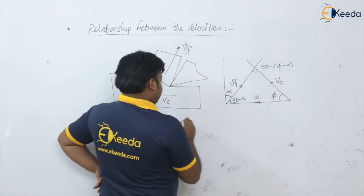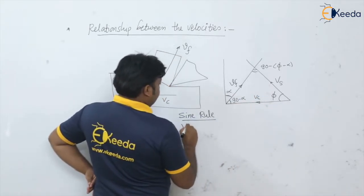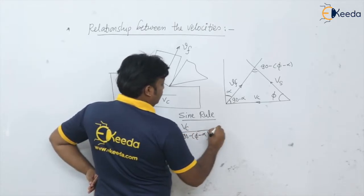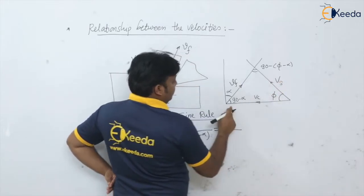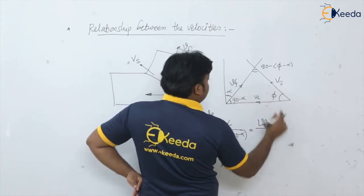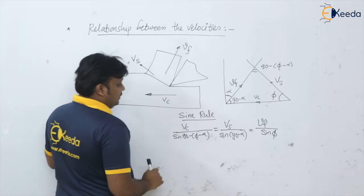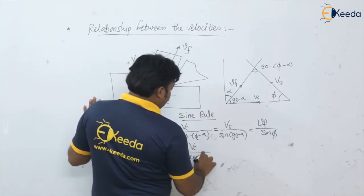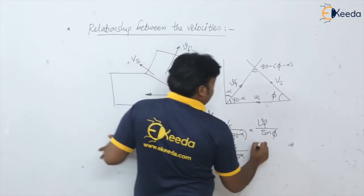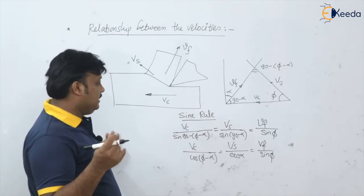If we apply the sine rule, we can write: Vc divided by sin(90 − φ − α) equals Vs divided by sin(90 − α) equals Vf divided by sin(φ). Simplifying, since sin(90 − θ) equals cos θ, we get: Vc divided by cos(φ − α) equals Vs divided by cos(α) equals Vf divided by sin(φ).